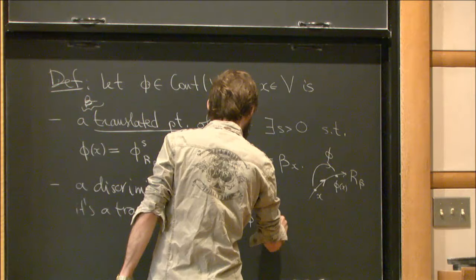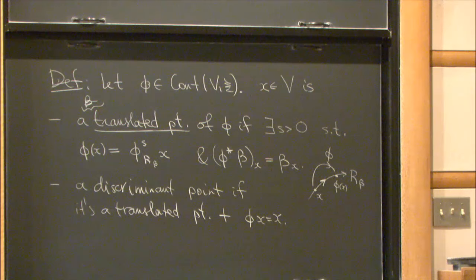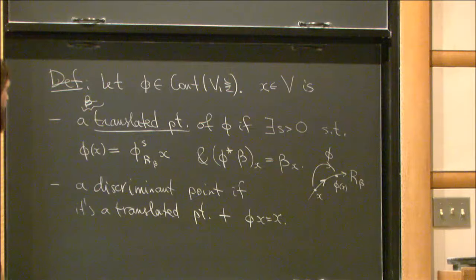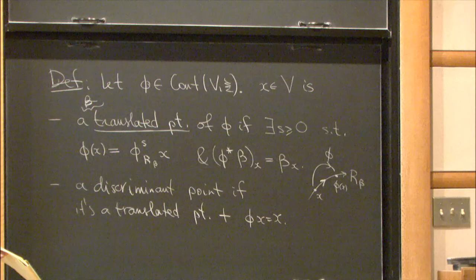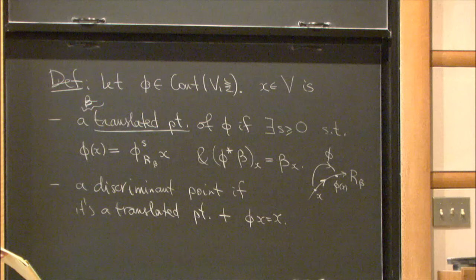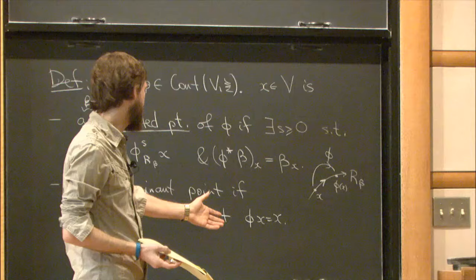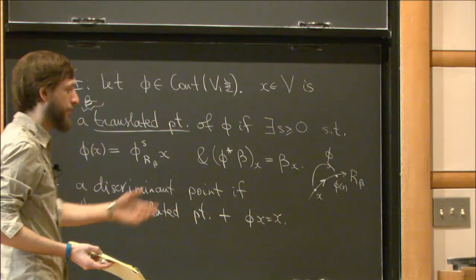A discriminant point is a translated point which is also fixed — so it's a fixed point at which φ preserves the contact form. The question came up: does S equal zero? No — if S were zero, it would just be a fixed point. A discriminant point is a translated point which is fixed.